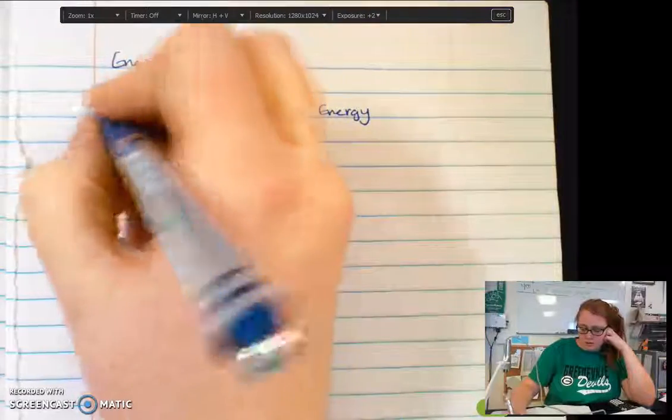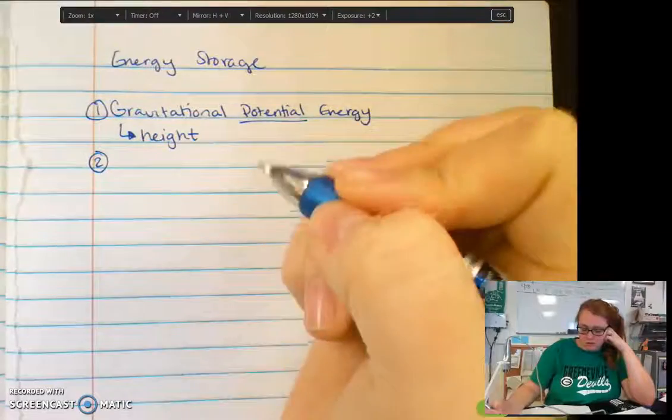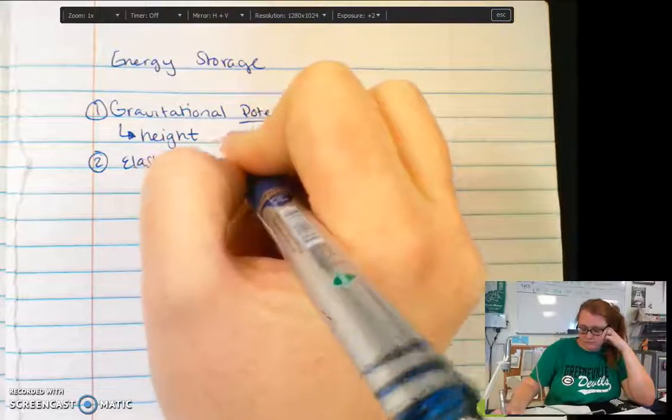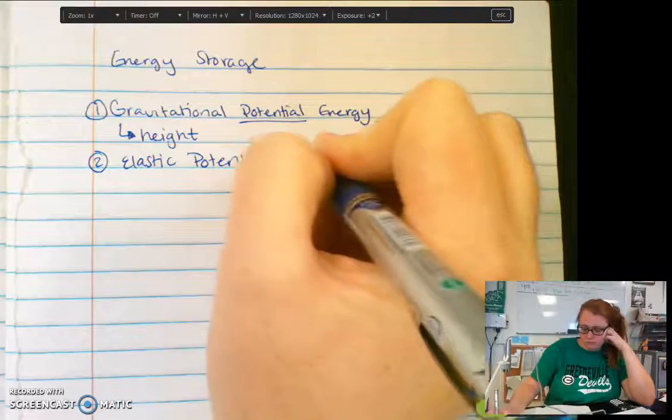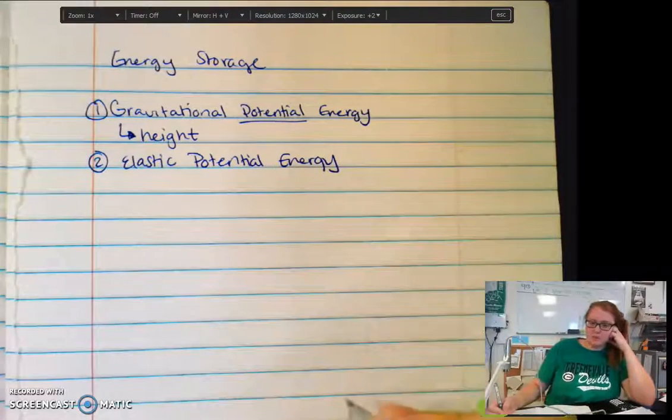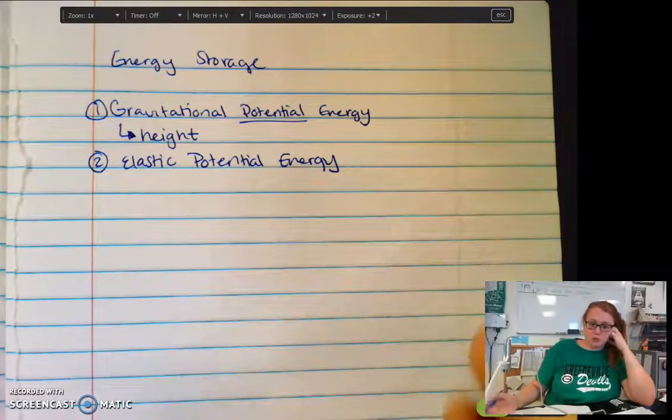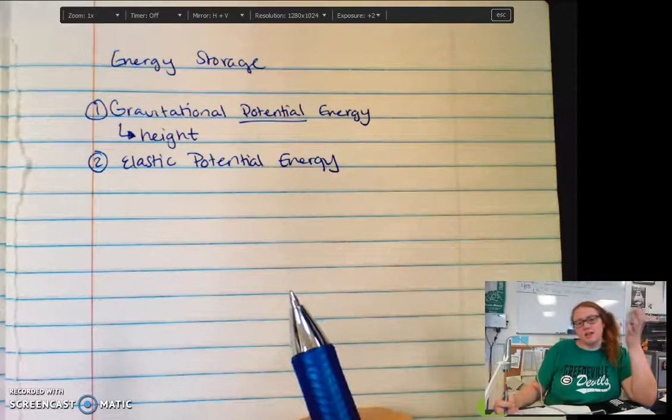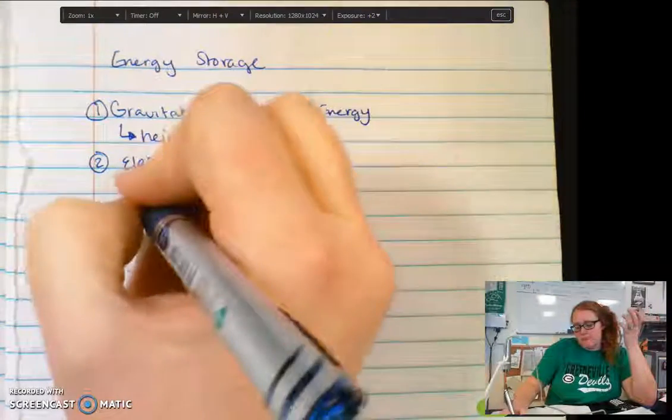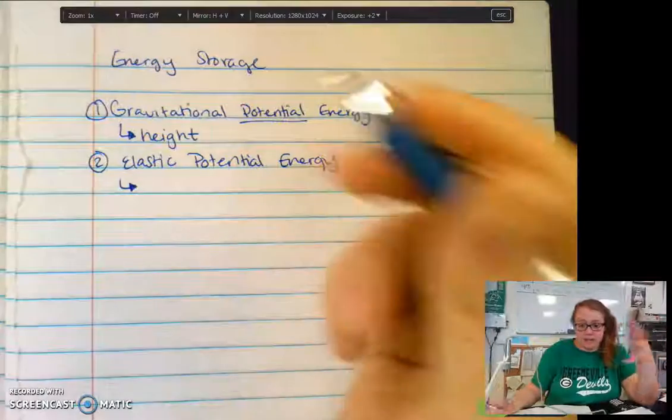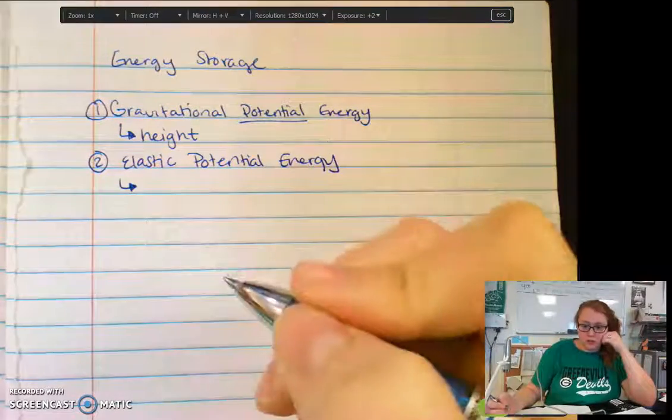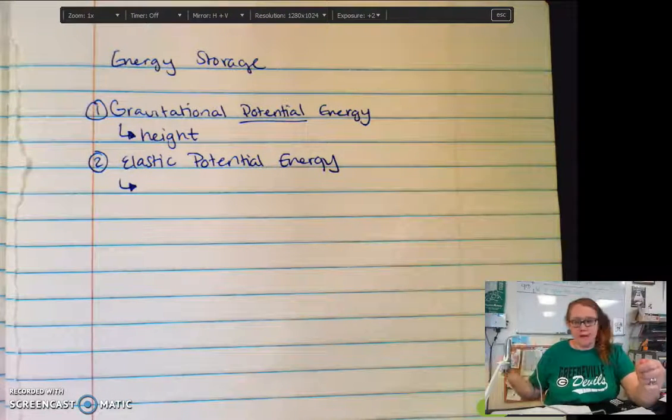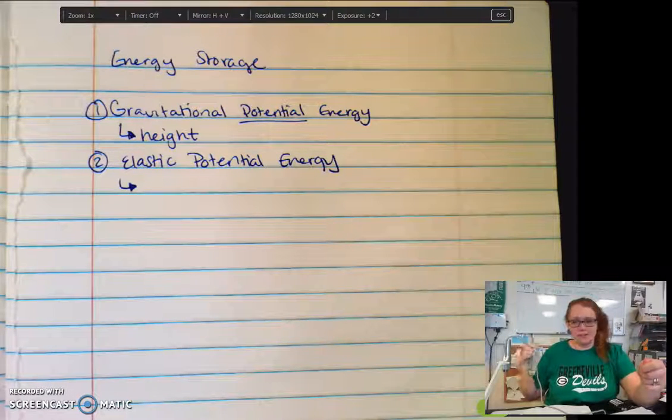Another energy storage is through elastic potential energy. Elastic potential energy deals with springs, rubber bands, bouncy balls, anything or any object that has a property of elasticity. It can bounce, it can stretch, it can be compressed. Think about a slingshot.